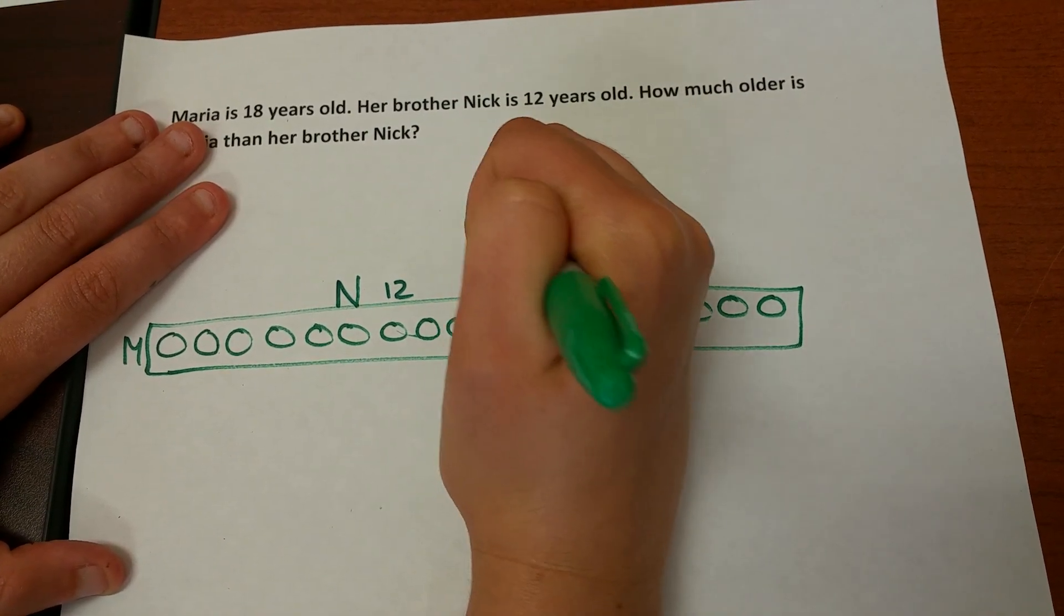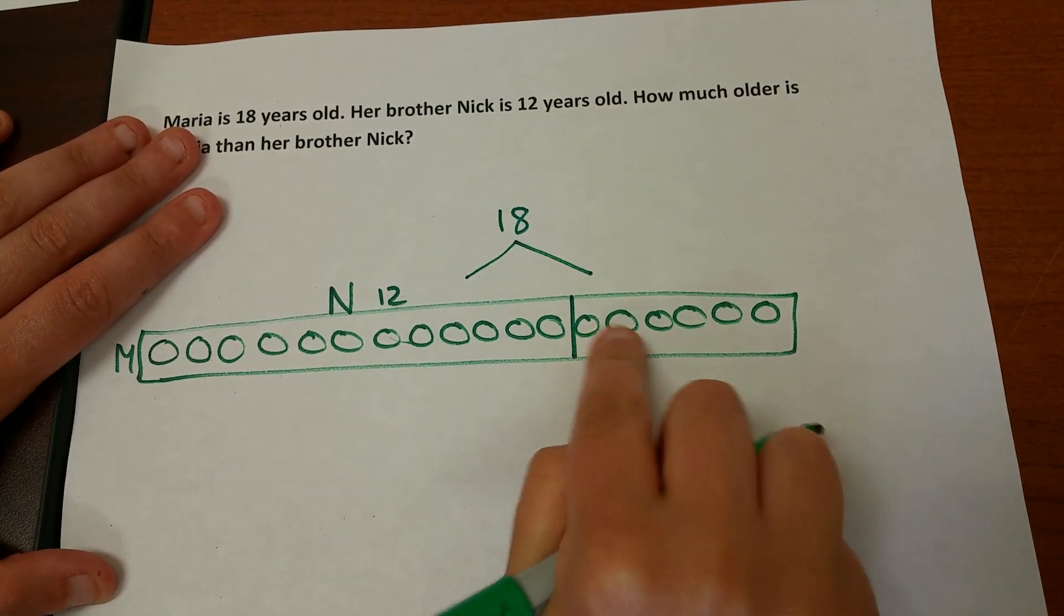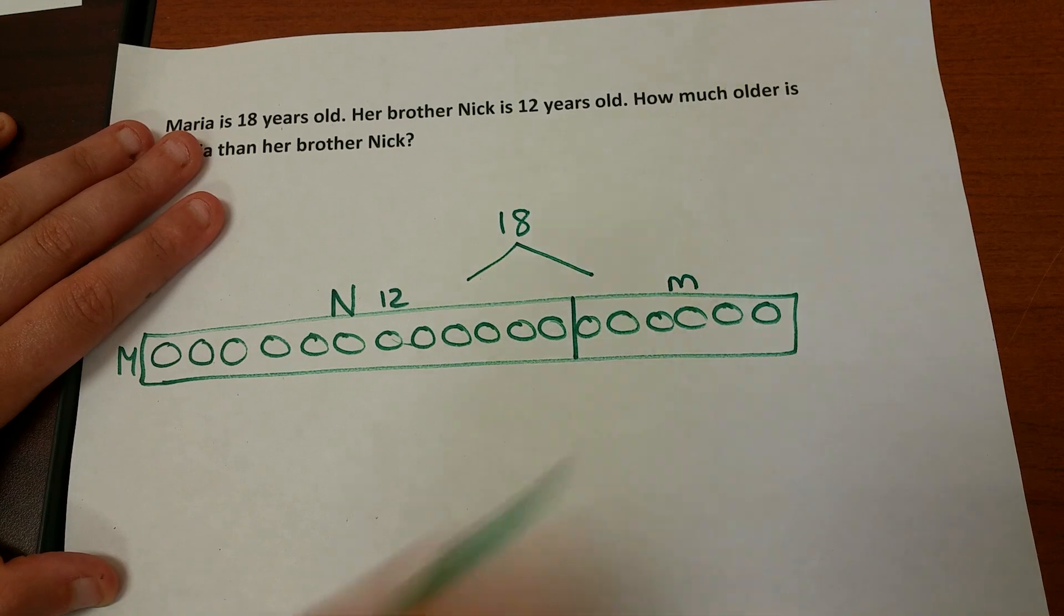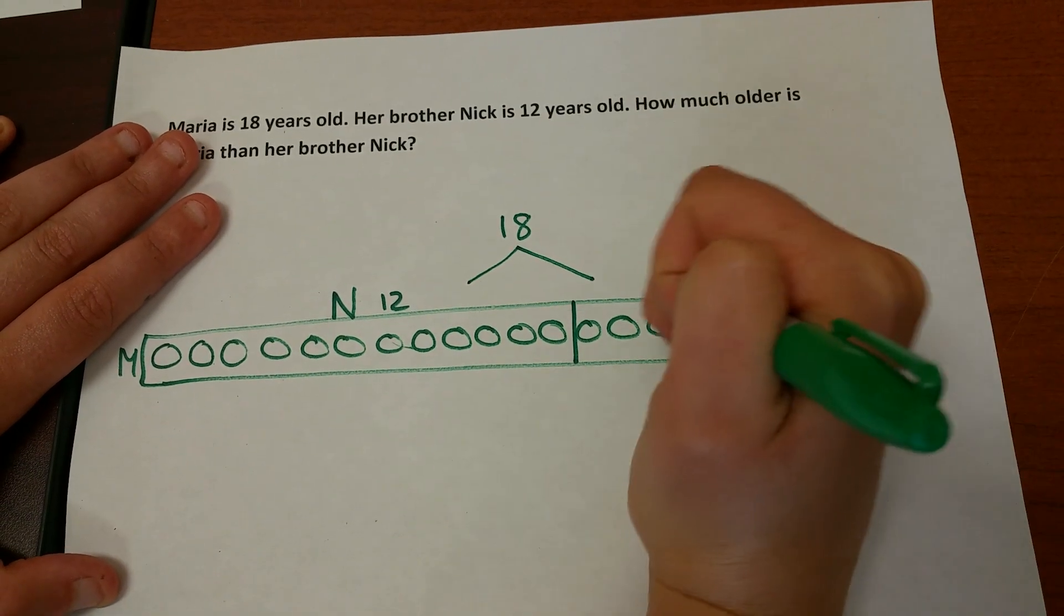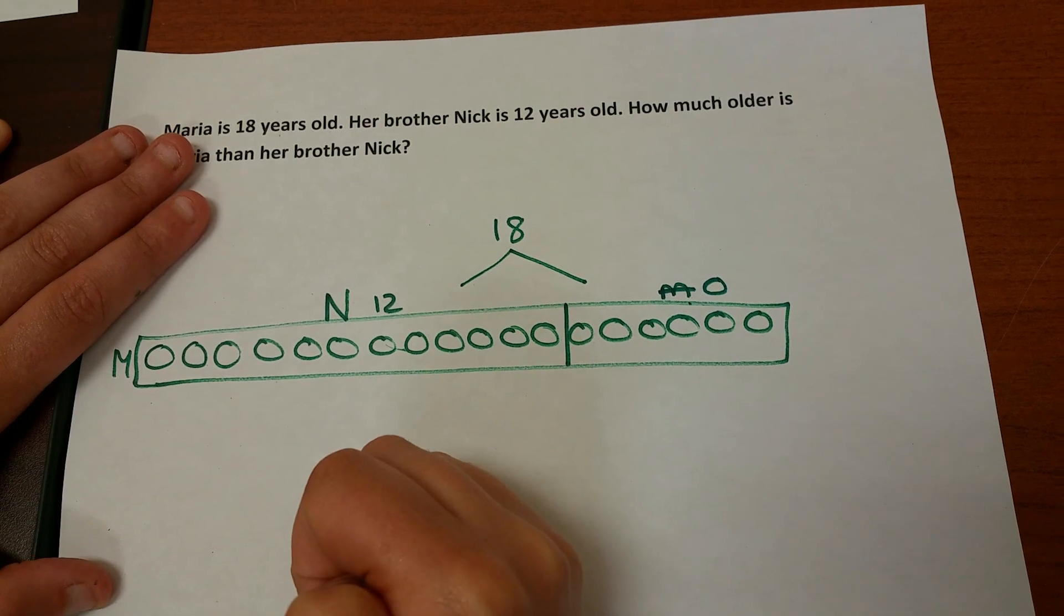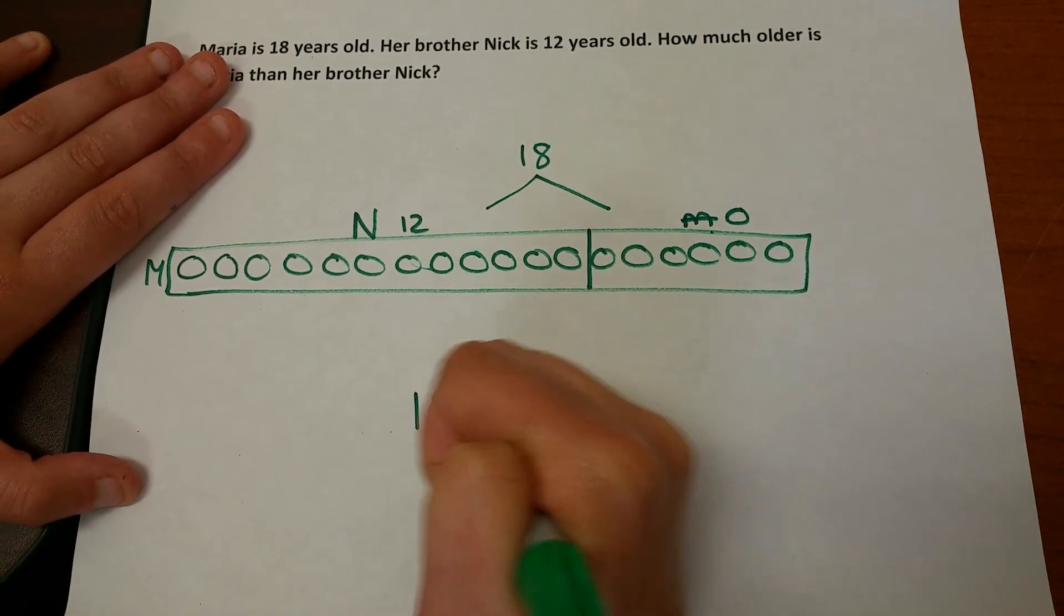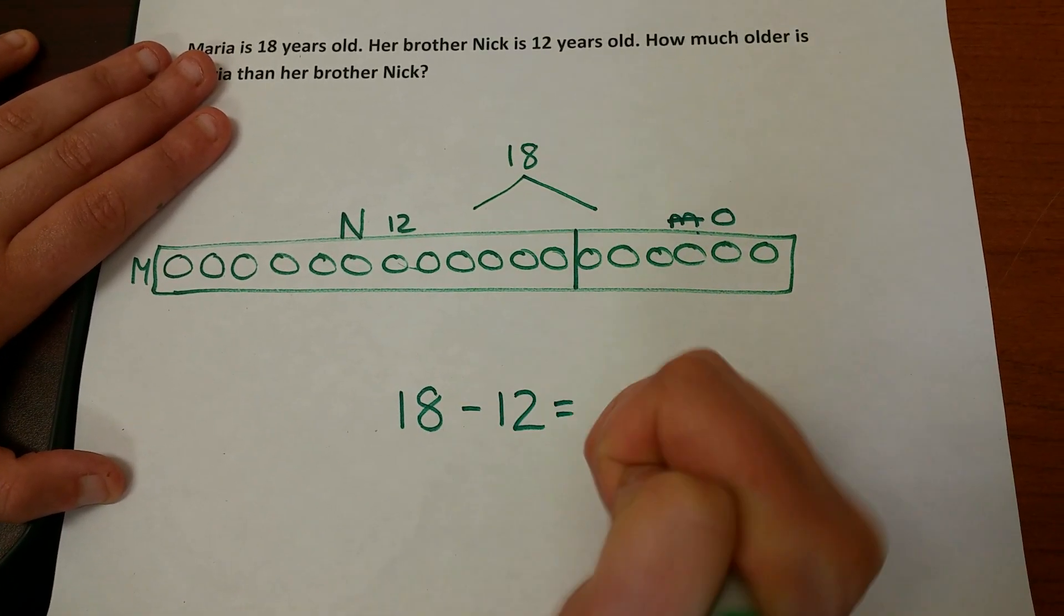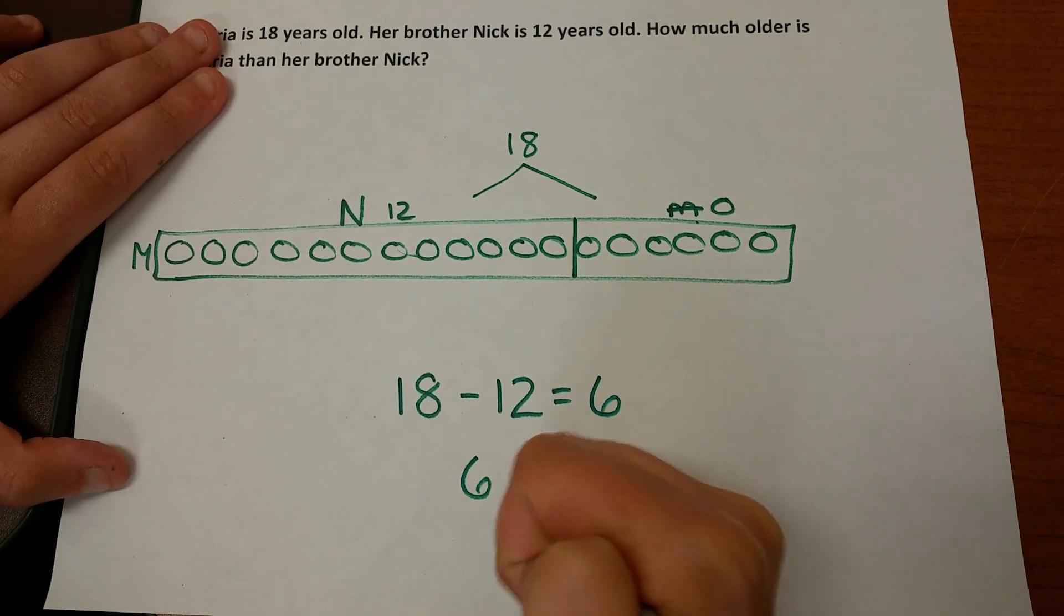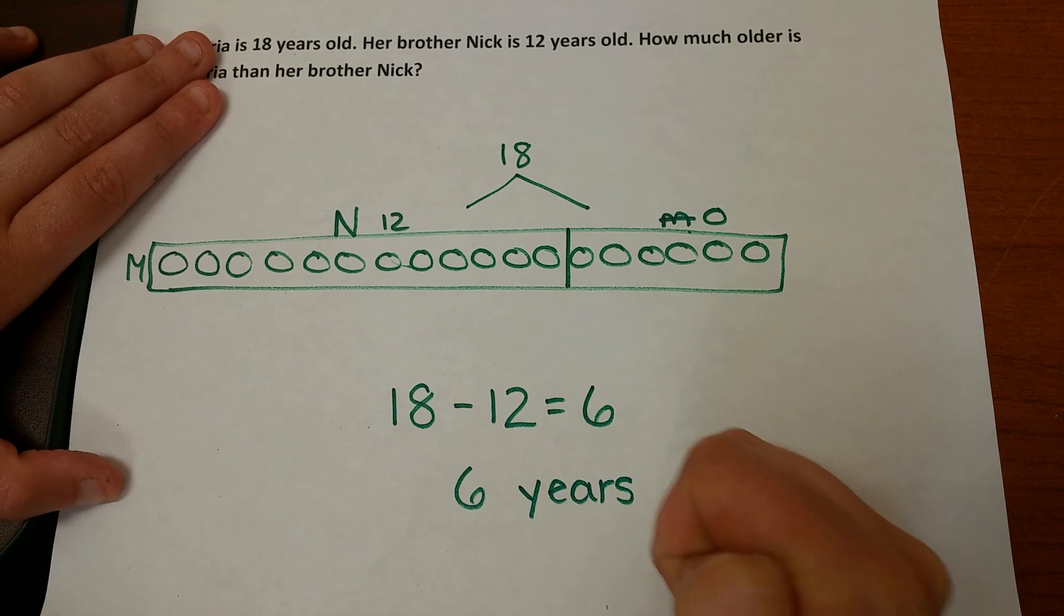So the total is Maria is 18. 1, 2, 3, 4, 5, 6. This is how much older she is, how many more years she has. Oh, there probably would be a better label. So we had 18, we took away the 12. Our answer is 6. She is 6 years older.